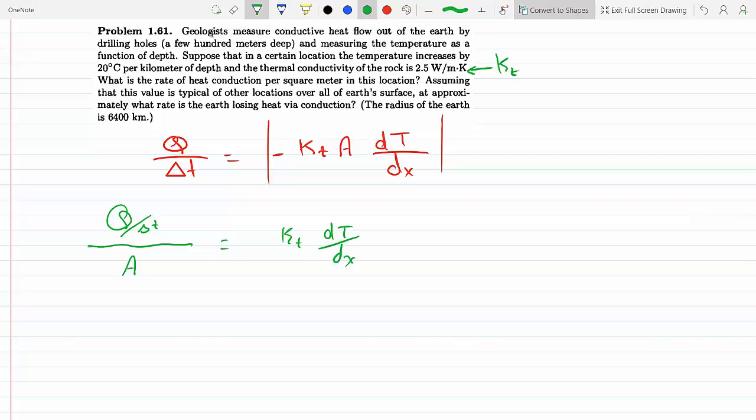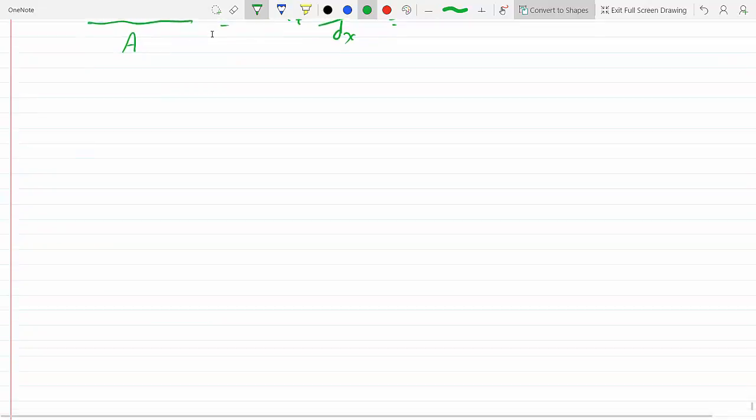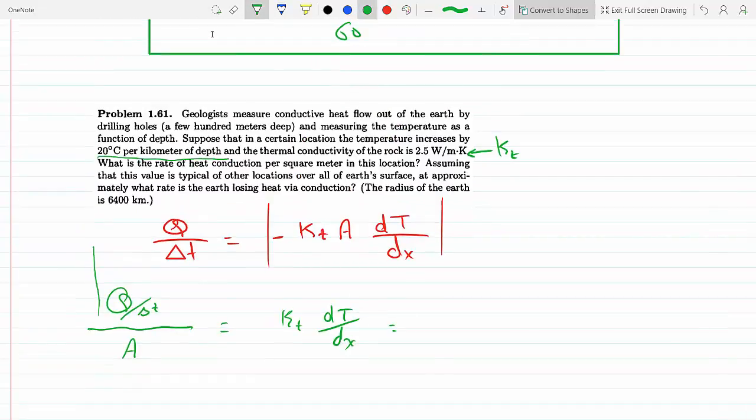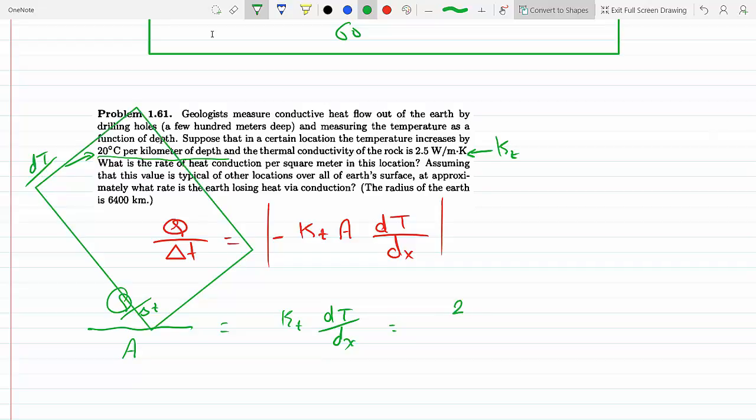And if I take the absolute value here, this will just be KT times change in temperature per change in depth, which I'm told is 20 degrees per kilometer of depth. So for every, that's what dT over dx is, for every change, for every 1 meter depth in x, the temperature changes by 20 degrees. That's the meaning of the derivative.